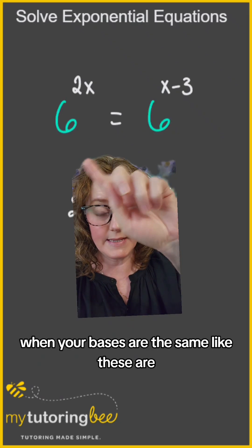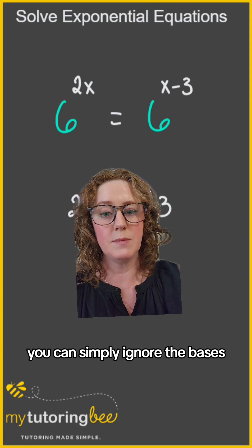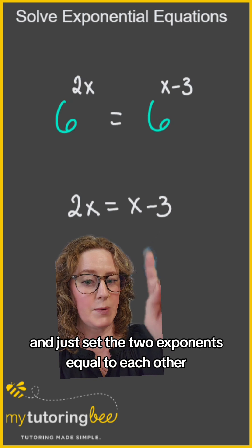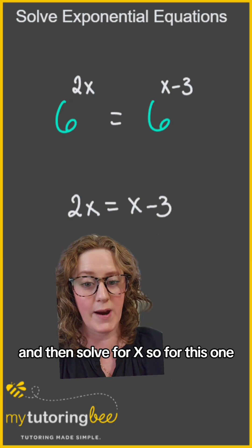When your bases are the same like these are, you can simply ignore the bases and just set the two exponents equal to each other and then solve for x.